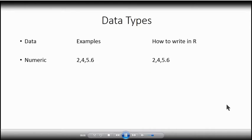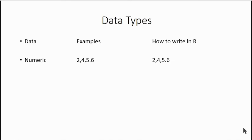There are six types of data in R. The first of them is numeric data. All the data in the form of numbers is called numeric data. For example, 2, 4, 5.6, 6.7, etc. This type of data is called numeric data.